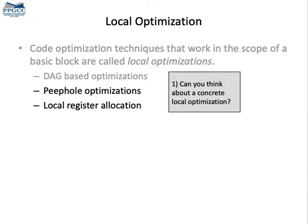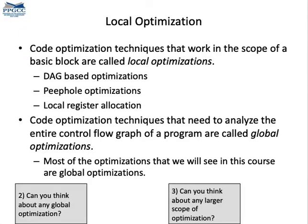Notice that there exist other optimizations that are also called local, but that do not use DAGs as the core data structure. For instance, we shall see later about local register allocation and peephole optimizations, which are not carried out onto directed acyclic graphs as the core data structure. In contrast, optimizations that see the entire control flow graph of a function are called global.